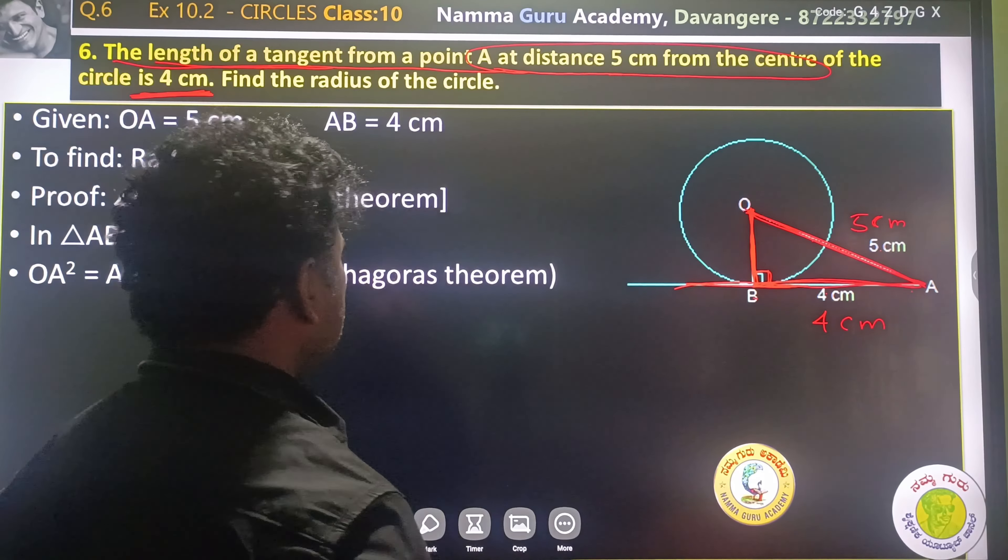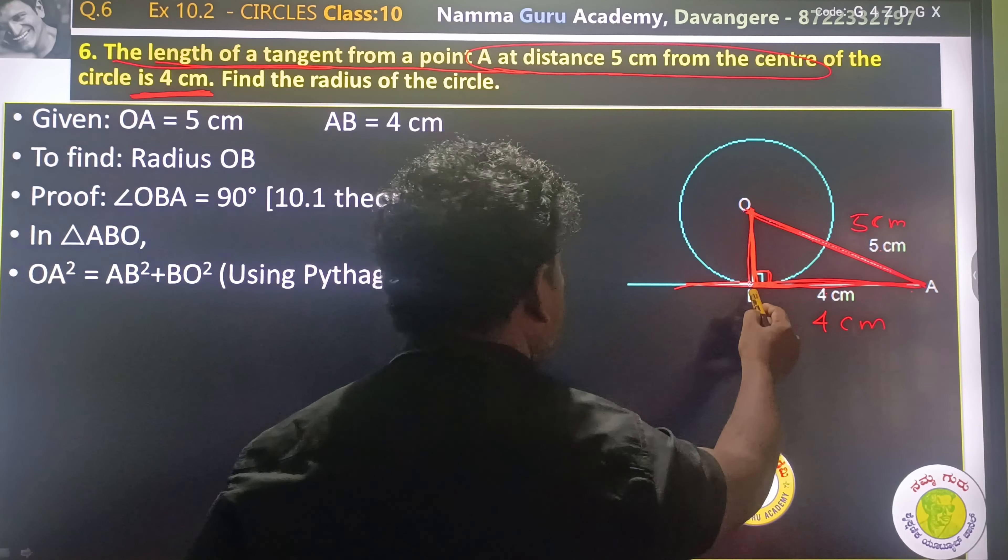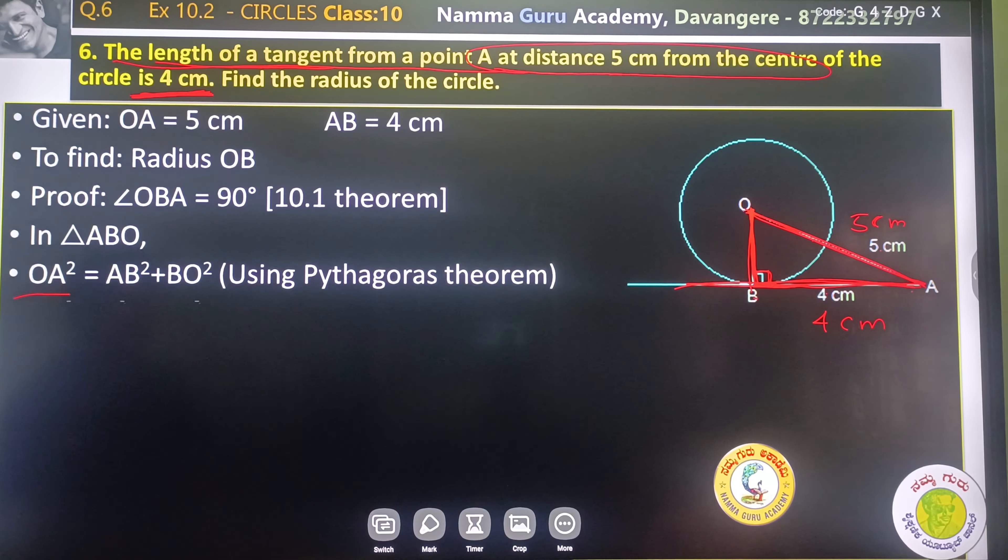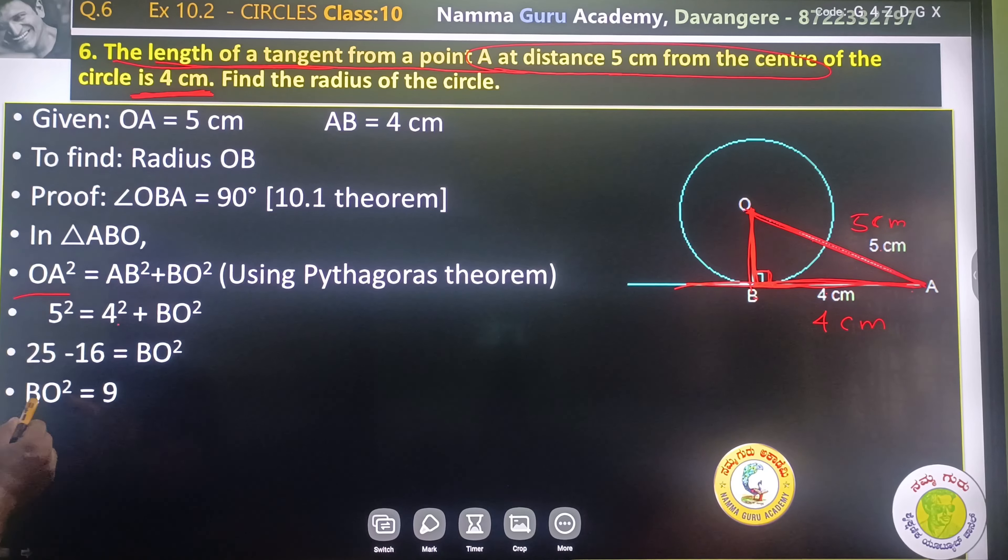Hypotenuse square is equal to base square plus perpendicular square. OA square is equal to AB square plus OB square. OA is 5 square, AB is 4 square. 5 square is 25, 4 square is 16. 25 minus 16 equals 9. BO square is equal to 9. BO is equal to 3. The radius is equal to 3.